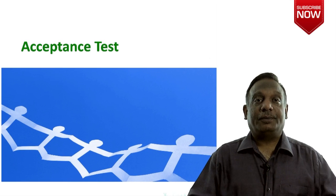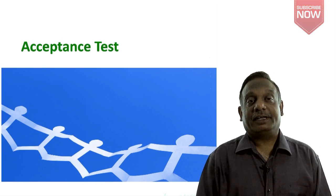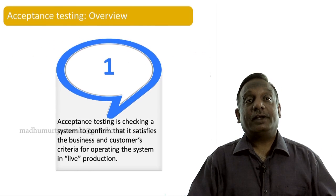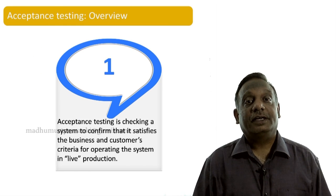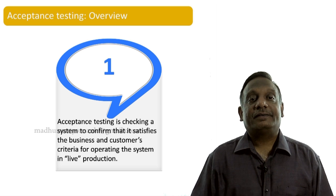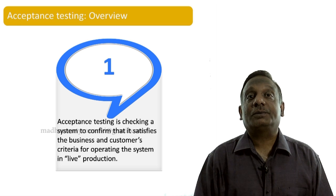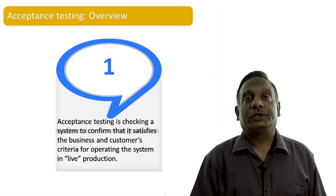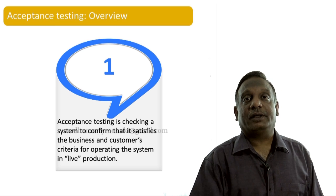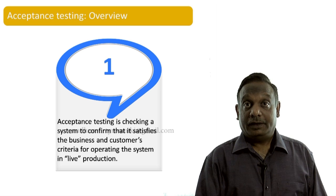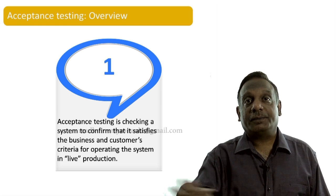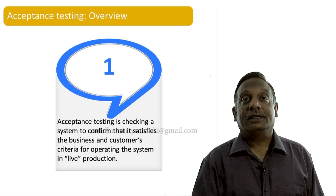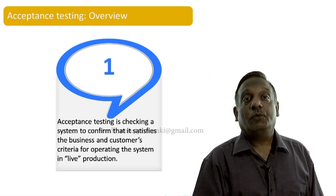Welcome back. Let us learn about the overview of acceptance level testing and also some of the key concepts involved. Acceptance testing is checking a system to confirm that it satisfies the business and customer's criteria for operating the system in live production. Just before the system moves into a live production environment, the end users — the people who gave the requirements — have to perform a set of tests, and based on the results they may accept or reject the system.